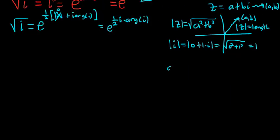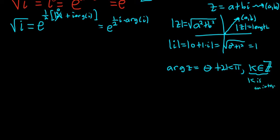The argument of a complex number z is defined to be theta plus 2k pi, where k is an integer. So k is an element of Z, the set of integers. You can write k as an integer instead of using this fancy notation.